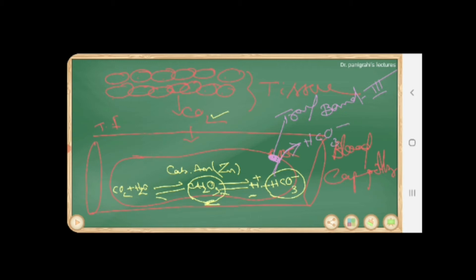When HCO3⁻ comes out of the RBC, there is a decrease in negative charges inside the RBC. To compensate, chloride ions present in the plasma enter into the RBC. This is known as the chloride shift — the exchange of bicarbonate ions for chloride ions — occurring through the Band 3 transporter to balance electrostatic neutrality.